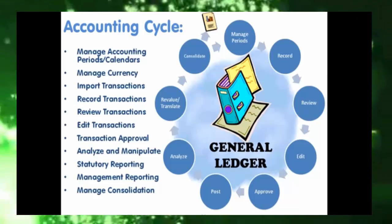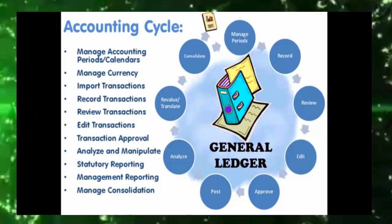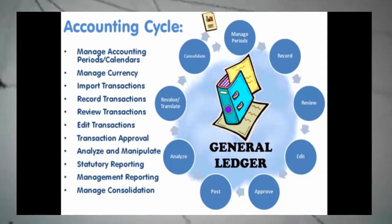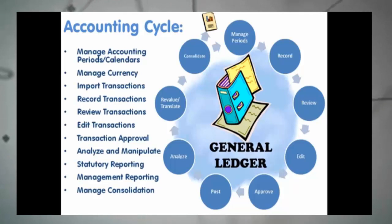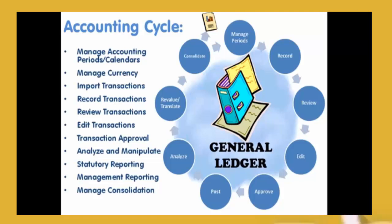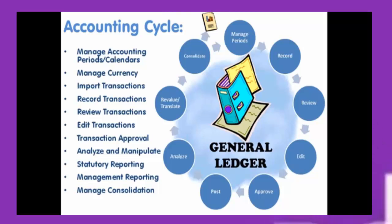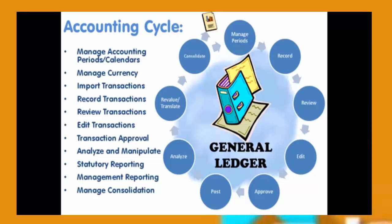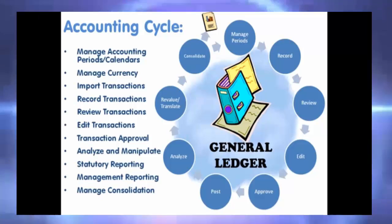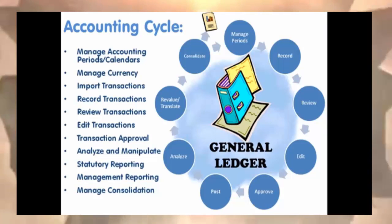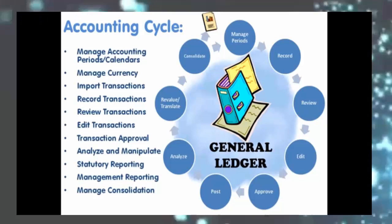Once you have all three, the typical accounting cycle works as follows: Manage accounting periods and calendars — make available the accounting period in which the transaction will take place. Manage currency — the currency used to make the transaction needs to be available in the system. Import or record transactions — if recording transactions in subsidiary ledgers, you need to import the financial portion, that is, debit and credit of transaction amounts and accounts, to the general ledger; alternatively, you can directly record these transactions in the general ledger. Review and edit transactions — once transactions are available you can review and edit them for any errors. Transaction approval — segregation of duties requires more than one person to complete the journal creation task; having the financial transaction approved by more than one individual prevents fraud and error.